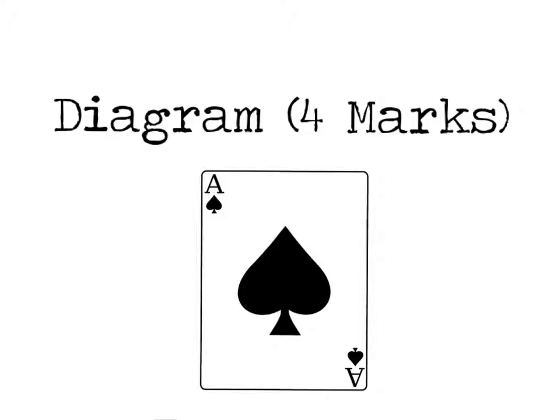When the examiners are marking this diagram, they're looking at a certain criteria to award the marks. And how I would ensure that I meet that criteria is thinking about ACE. What I mean by ACE is, first of all, let's look at the A. The A should stand for AXIS. So have you labelled the AXIS correctly? Because they're easy mistakes to lose.